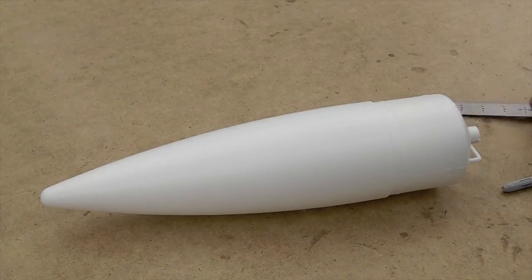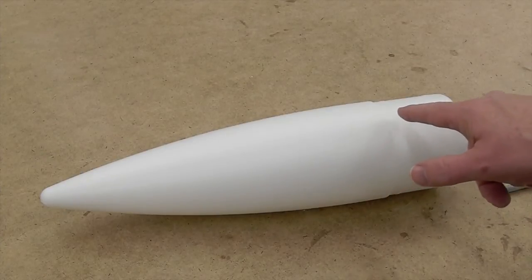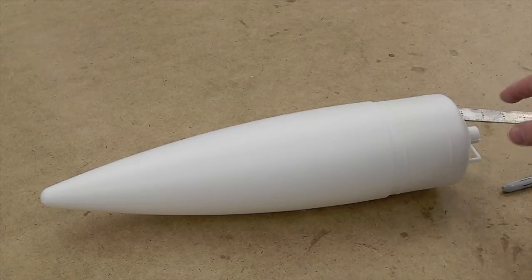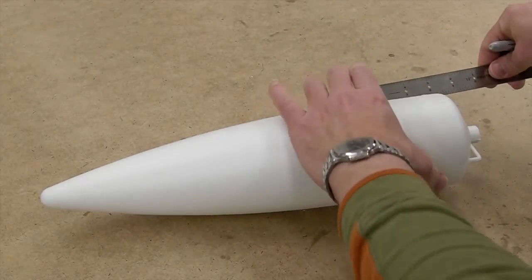So the first thing we're going to do is cut off the base, this small loop, but we want to preserve as much of the shoulder as possible.